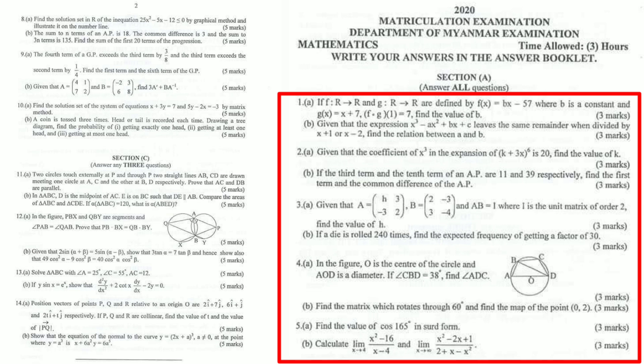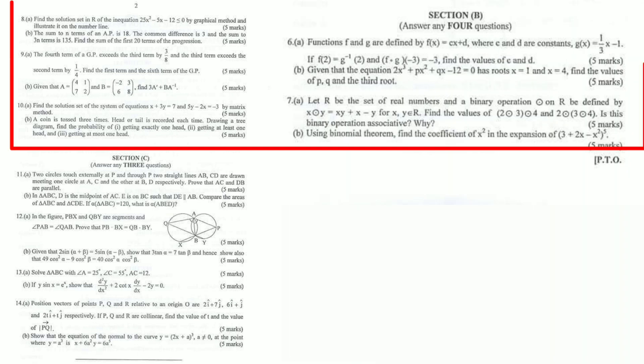The points and marks for Section A are divided accordingly. The total marks for this section will be as indicated in the original paper.